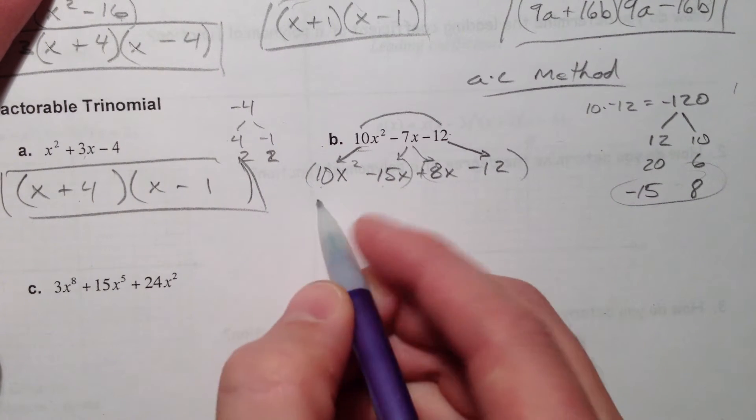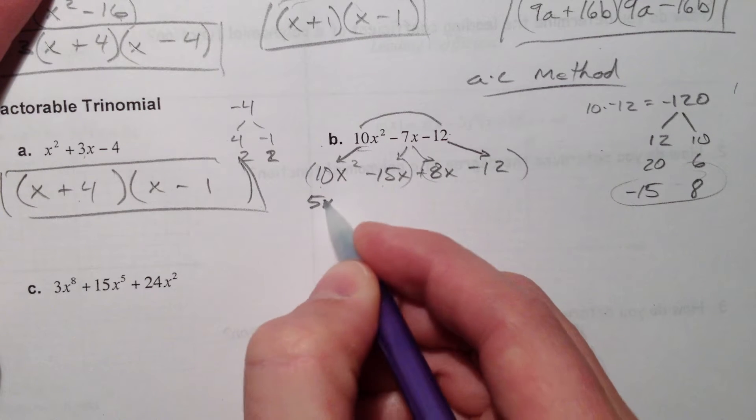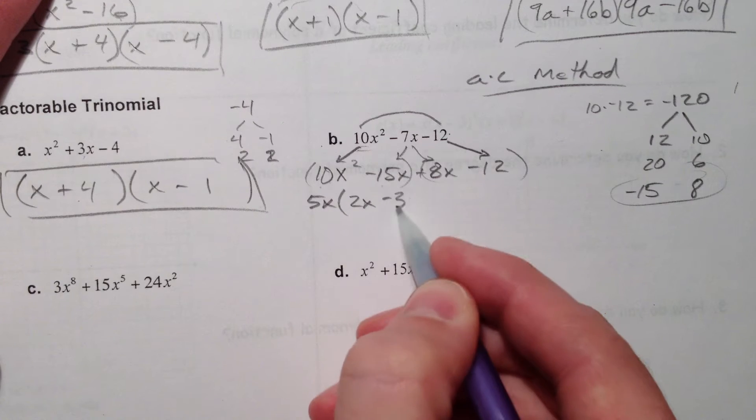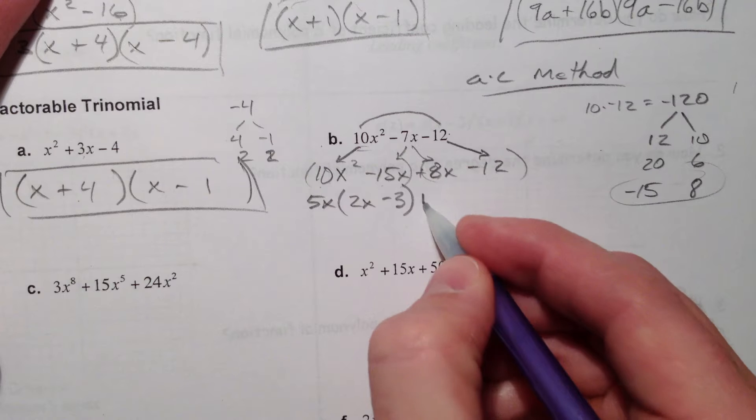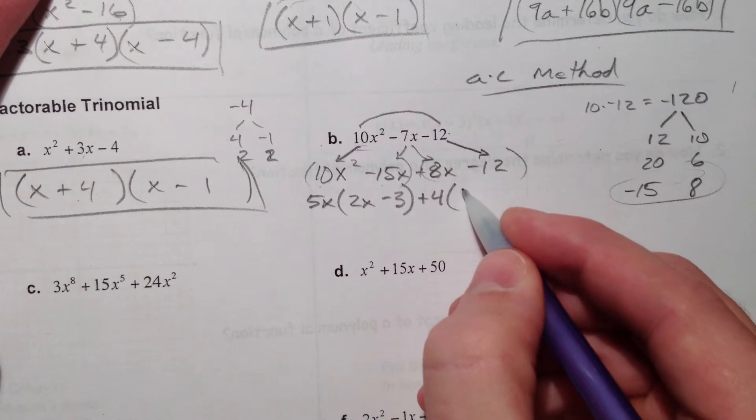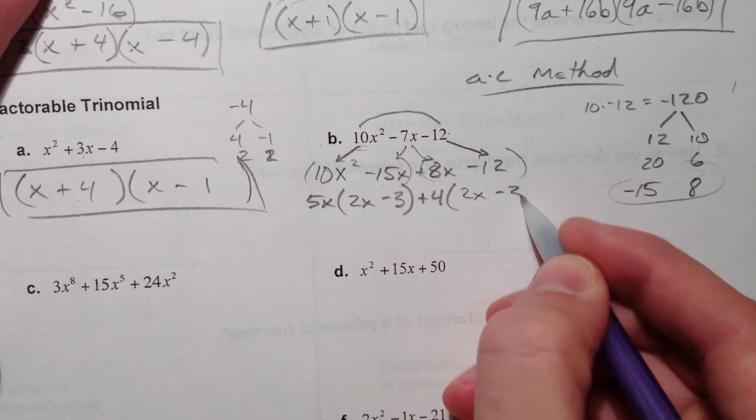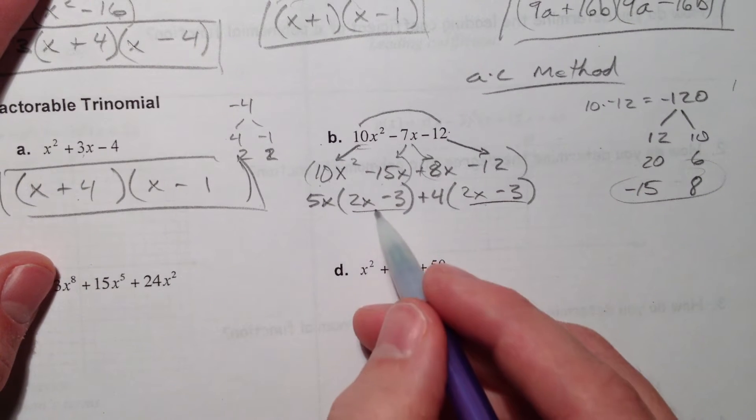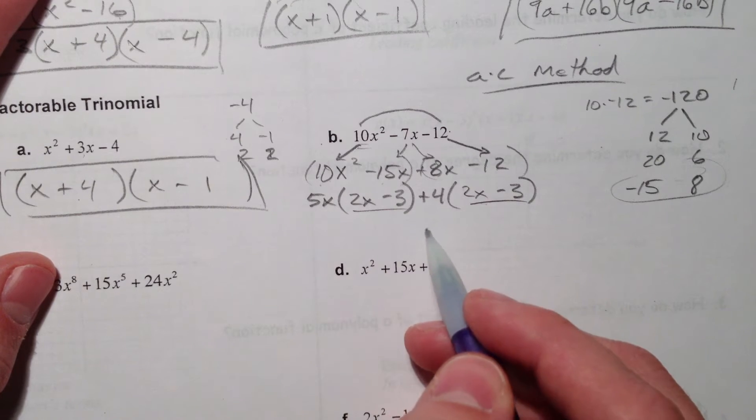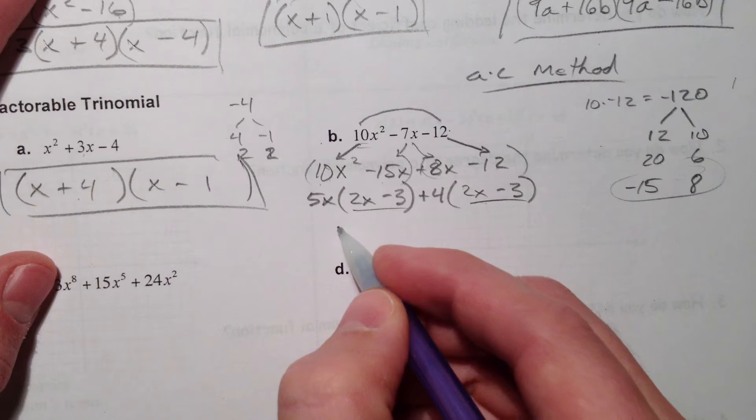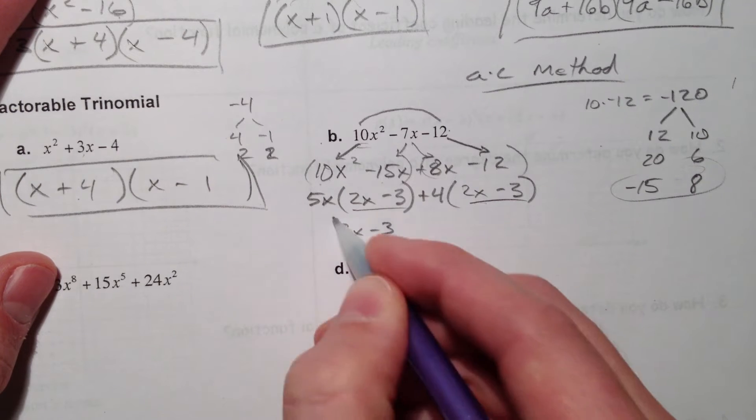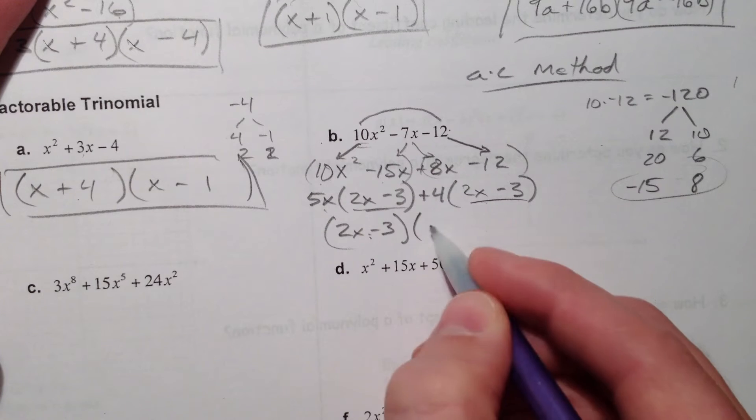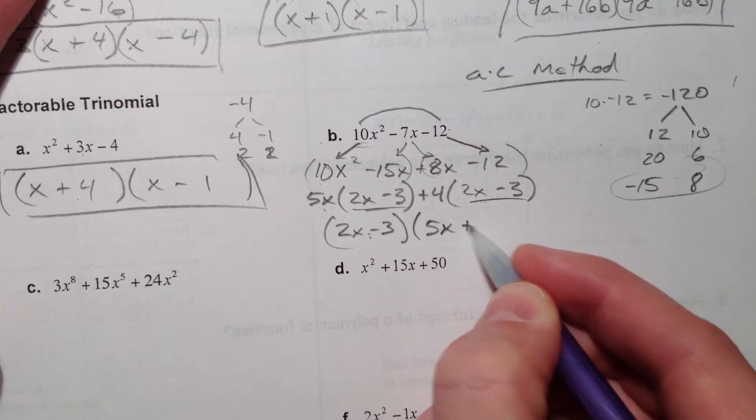So we can pull a 5x out. That leaves 10 divided by 5 is 2x, 15 divided by 5 minus 3. We can pull a 4 out of the second one. That leaves 2x, 12 divided by 4 is 3. These have to match up. Otherwise, it's not going to work out. If they don't match up, you either haven't taken everything out, or you chose the wrong numbers to begin with.